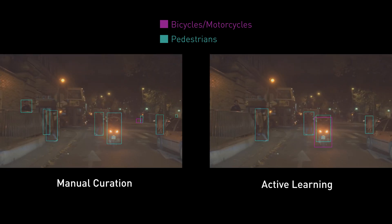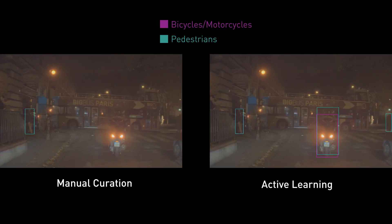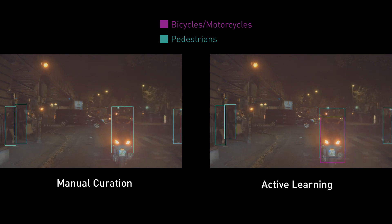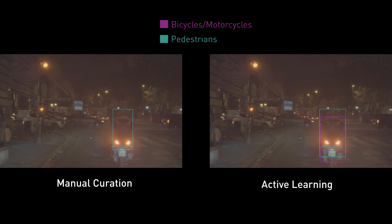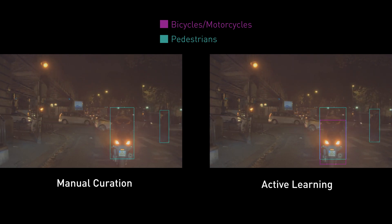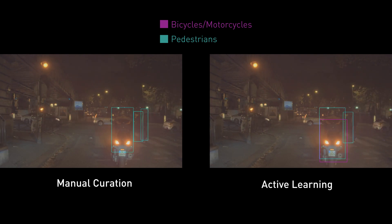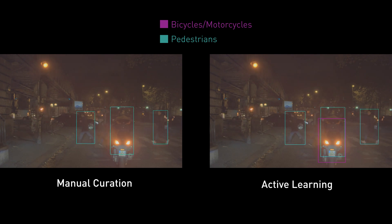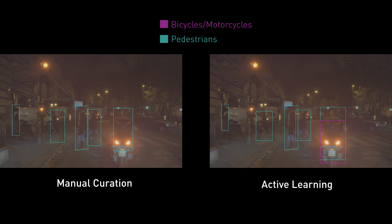And in this clip, we see that the DNN model trained with active learning consistently and correctly detects both the motorcycle and the person riding it, despite the low visibility conditions.